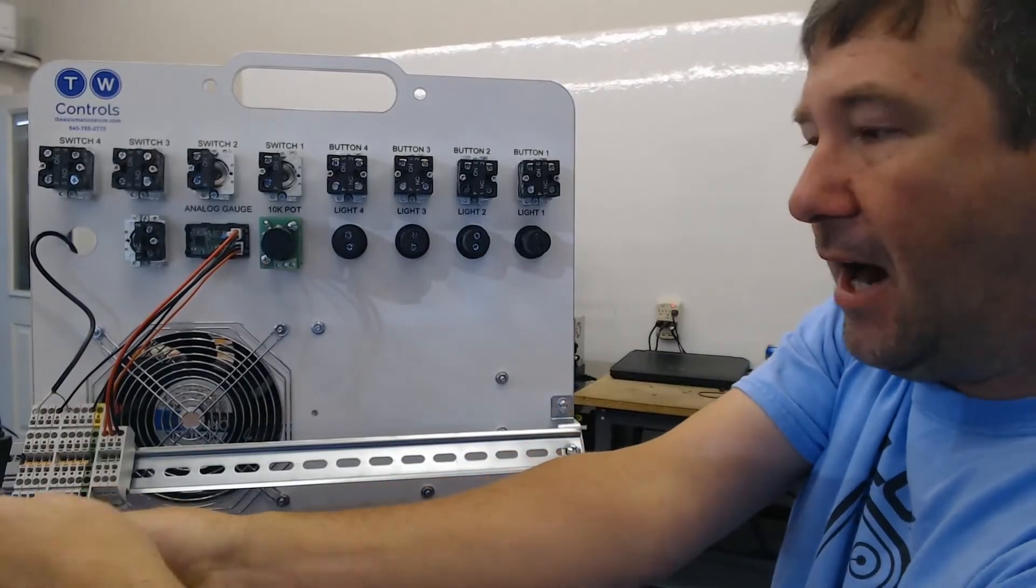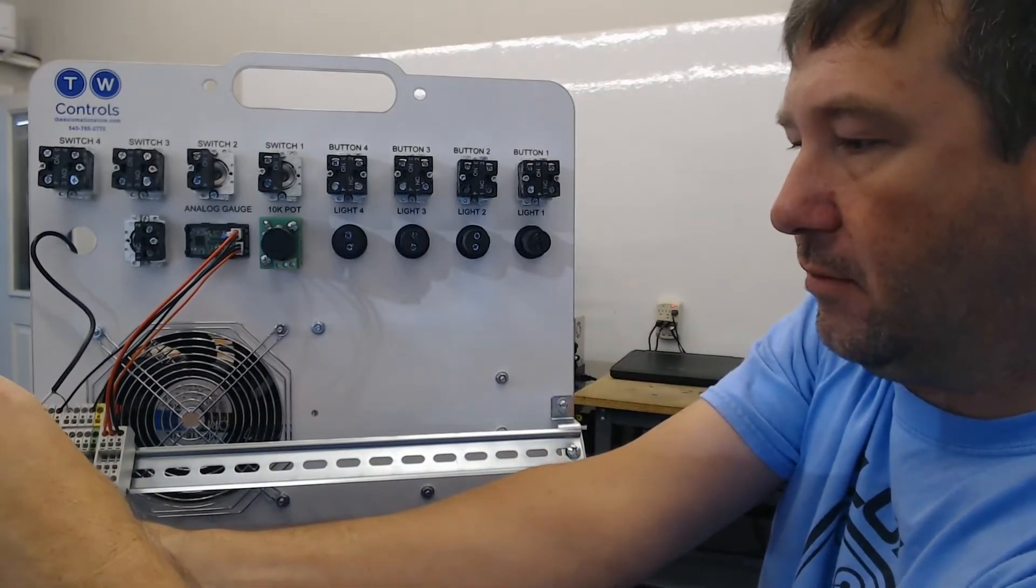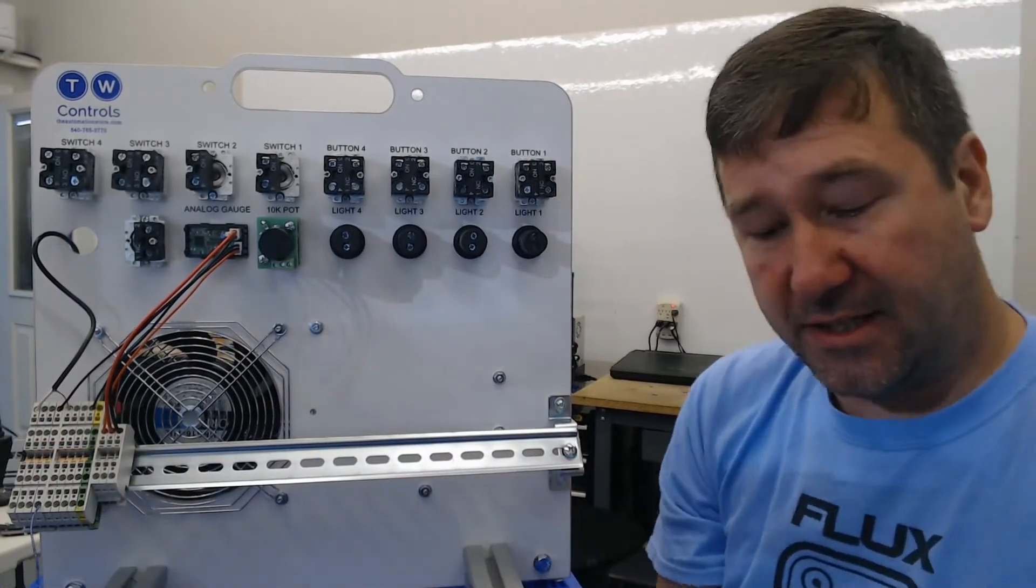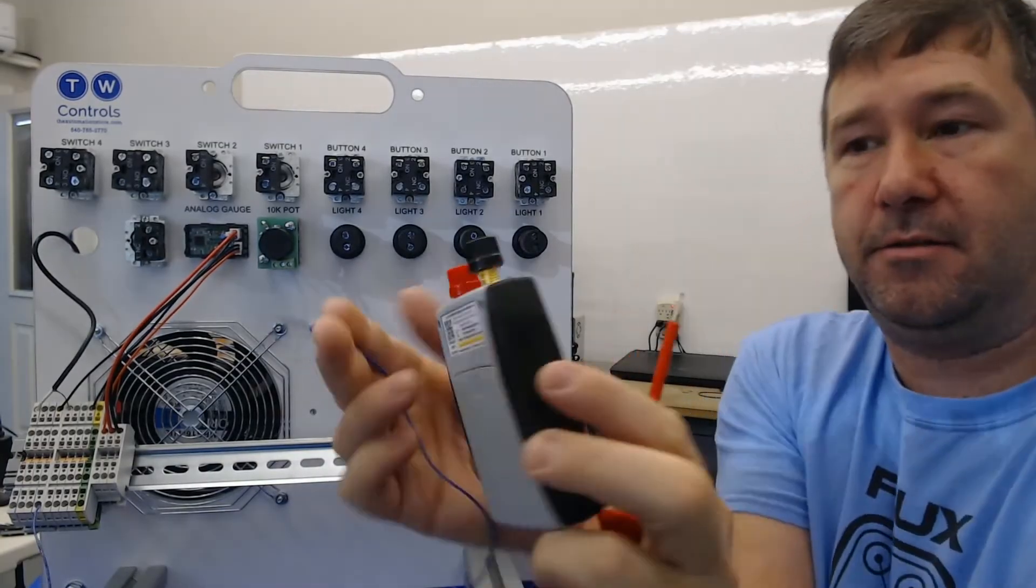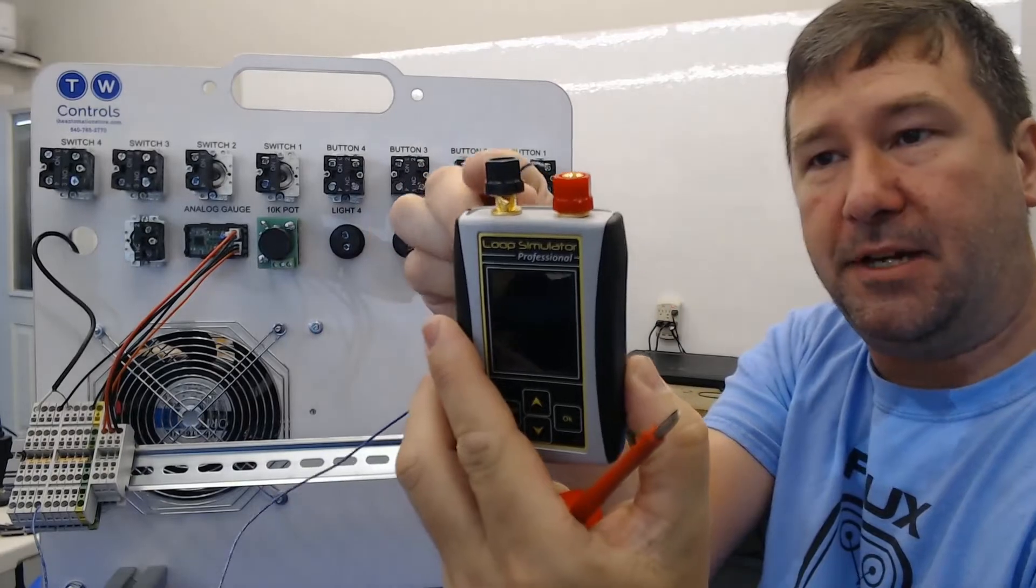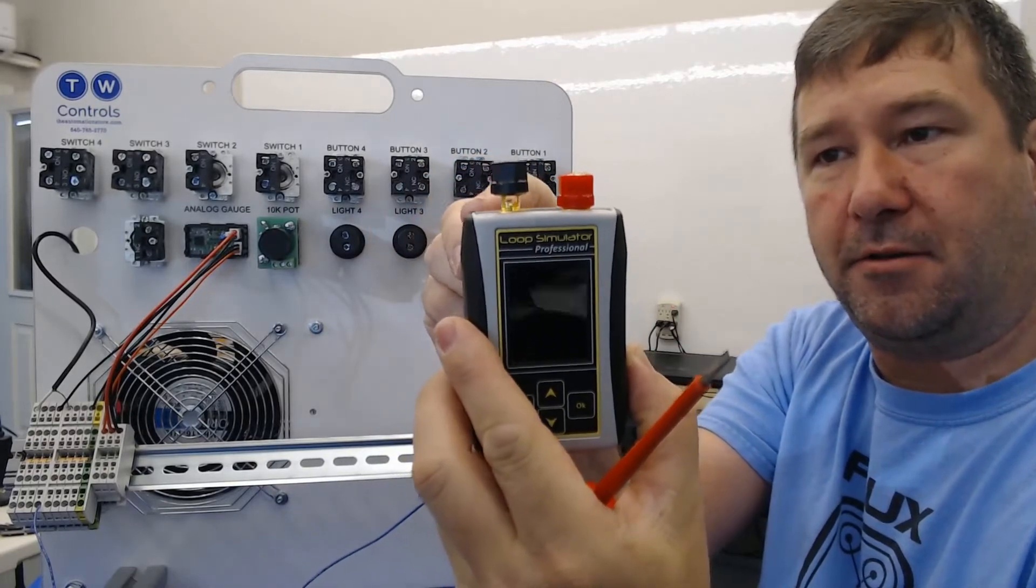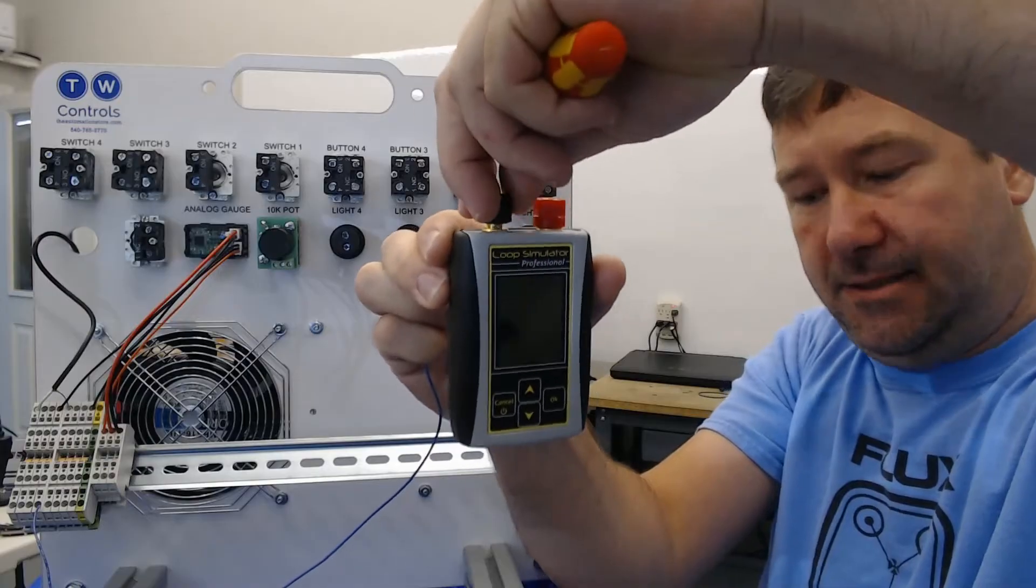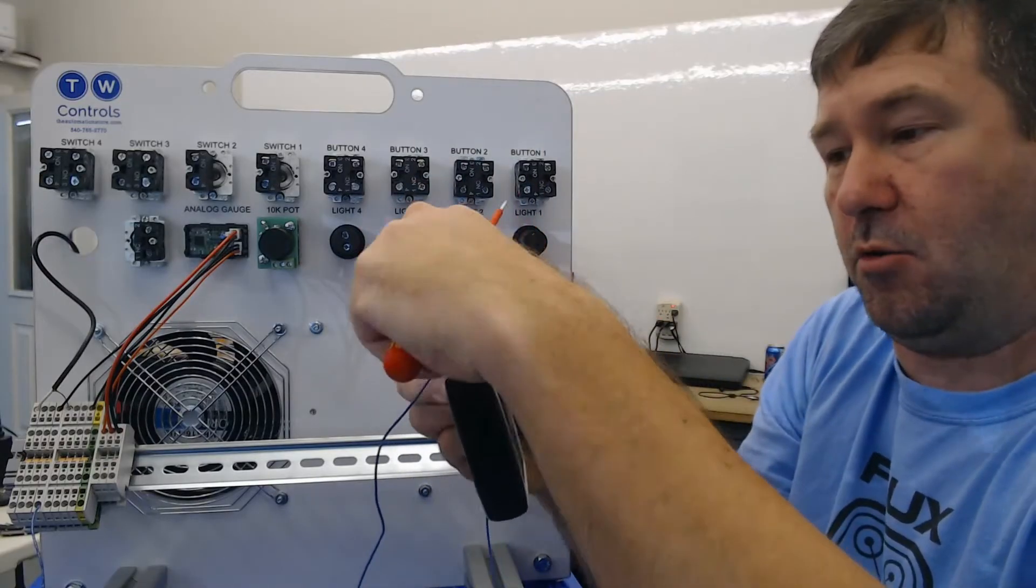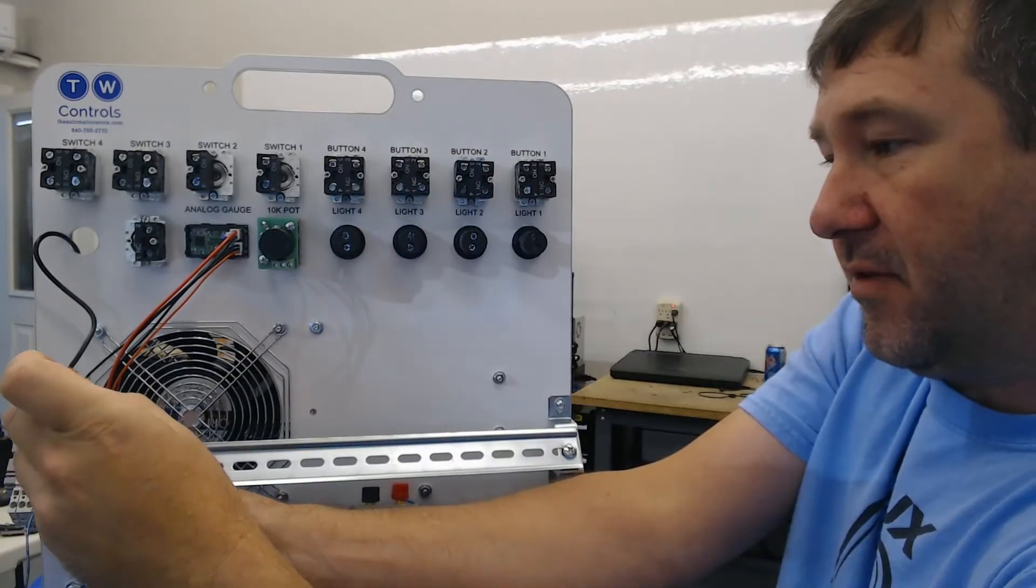We're going to start with a power wire, so it'll be our 24-volt plus, and then that is going to go to the black terminal of our analog simulator. It's right here. We have a nice little side post that you can just slide the wire through, tighten that down. Then we're going to go from our red terminal to the positive of our meter.